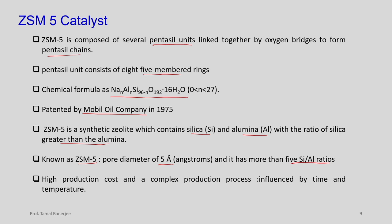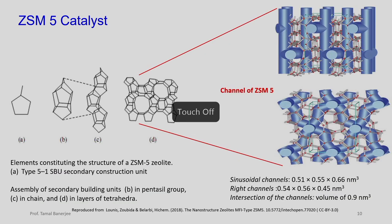As obvious, if you synthesize a new catalyst it also comes with its own disadvantages. Disadvantages are high production cost and complex production. The production is costly as well as complex, influenced by time and temperature. Those working in heterogeneous catalysis may know that these catalysts are not easy to make — it involves a number of steps, and each step increases the price of the catalyst due to additional operations.